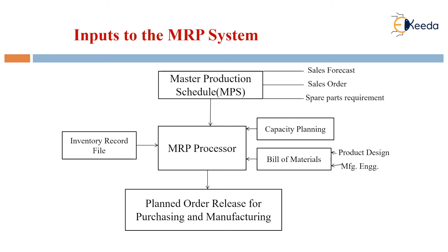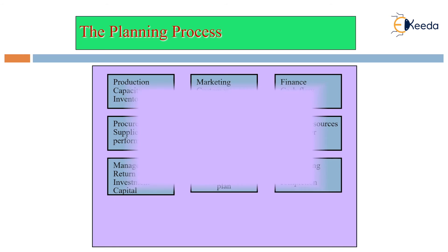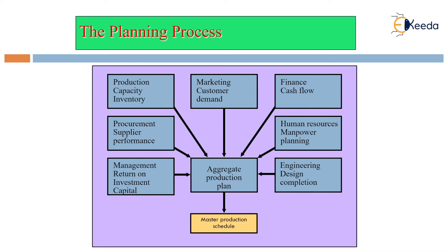The MRP processing produces the planned order release for purchasing and manufacturing based upon the entire process. The planning process comes under aggregate production planning, which depends upon factors like management, return on capital investment, procurement, supplier performance, production capacity, inventory, marketing, customer demand, finance, cash flow, human resources, manpower planning, and engineering design completion.